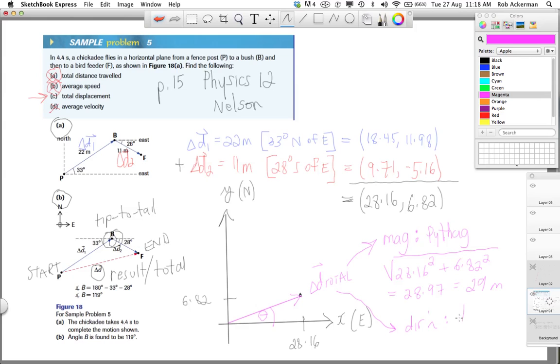And we also need to find the direction. And that we find using trig. You can use the tan ratio here, opposite over adjacent. So, we're going to have tan theta equals the opposite, 6.82 over the adjacent, which is 28.16. And if you do that, you're going to come out with theta equaling about 13.61 degrees.